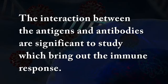Introduction. Immunogenetics is the study of different antigens and antibodies. The interaction between the antigens and antibodies is significant to study, as it brings out the immune response. Many antigens inside the body bind with specific antibodies. The genetics behind the formation and interaction of antigen and antibodies is addressed in immunogenetics — how exactly antibodies are formed and specific to the invading antigens.